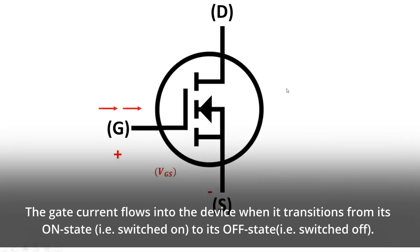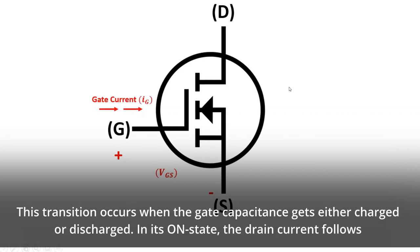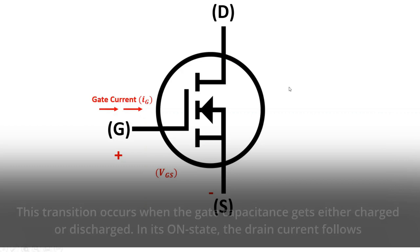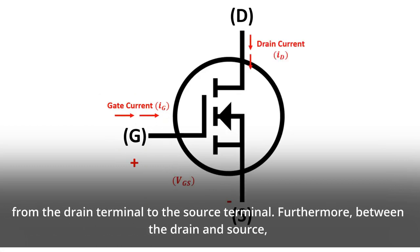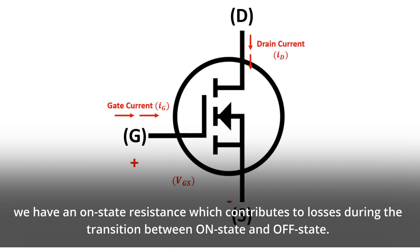The gate current flows into the device when it transitions from its on state, i.e. switched on, to its off state, i.e. switched off. This transition occurs when the gate capacitance gets either charged or discharged. In its on state, the drain current flows from the drain terminal to the source terminal. Furthermore, between the drain and source, we have an on state resistance which contributes to losses during the transition between on state and off state.